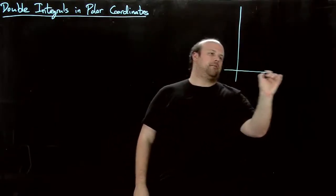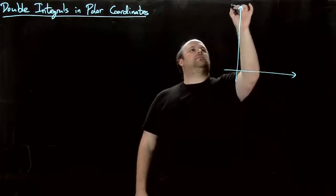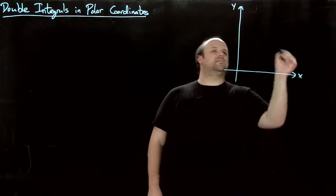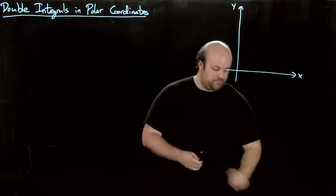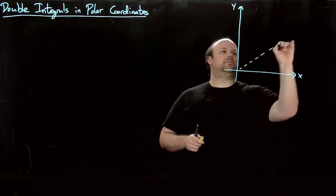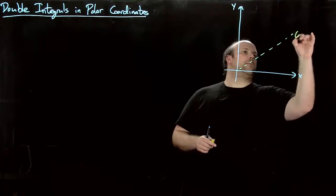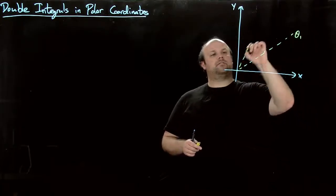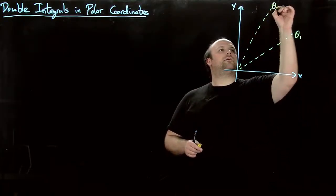So it looks something like this. So we have y, x, and then let's say it has angle theta 1 and angle theta 2.